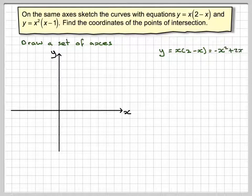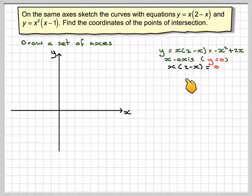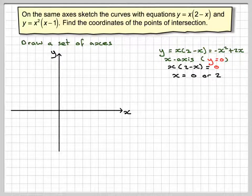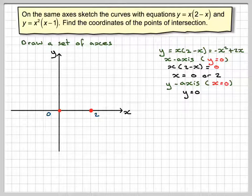Experience tells us that x(2 - x) expands to -x² + 2x, so this is the quadratic. For the x-axis, y = 0, so we take the factorised version: x(2 - x) = 0, giving x = 0 or 2 - x = 0, which means x = 2. Plot those points onto the graph — remember this is a sketch, so plain paper works fine. For the y-axis, x = 0, and we can see y = 0.